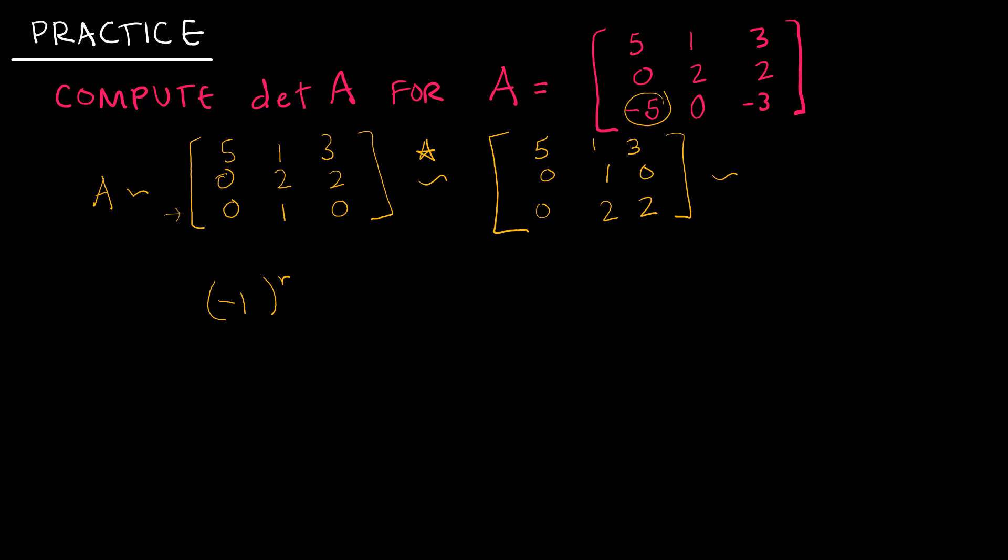So continuing to echelon form, I would take my first row and keep it the same. And I would take my second row and keep it the same. And my third row, I would take -2 times row 2 and add it to row 3. So that's [0, 0, 2]. So my definition just told me that in order to find the determinant of A, I'm going to take (-1)^R. And R is the number of swaps I did, which was just 1. And then I'm going to multiply that by the product of the diagonals. So 5 times 1 times 2. So -1 times 5 times 1 times 2 is -10.